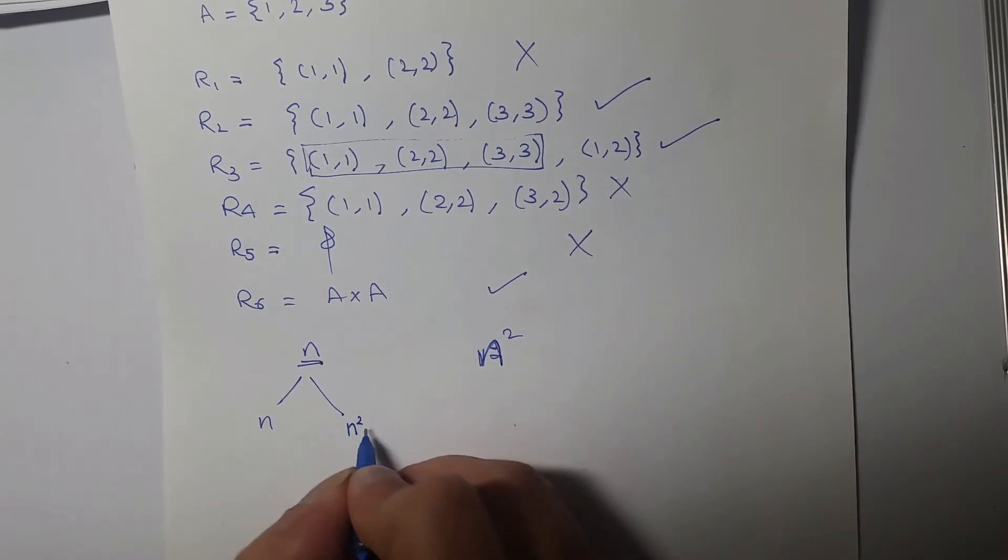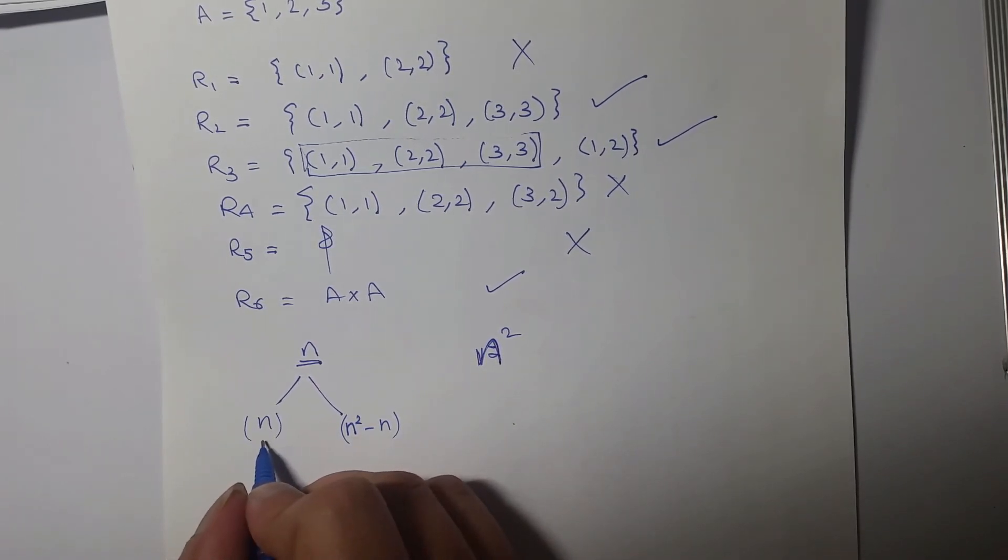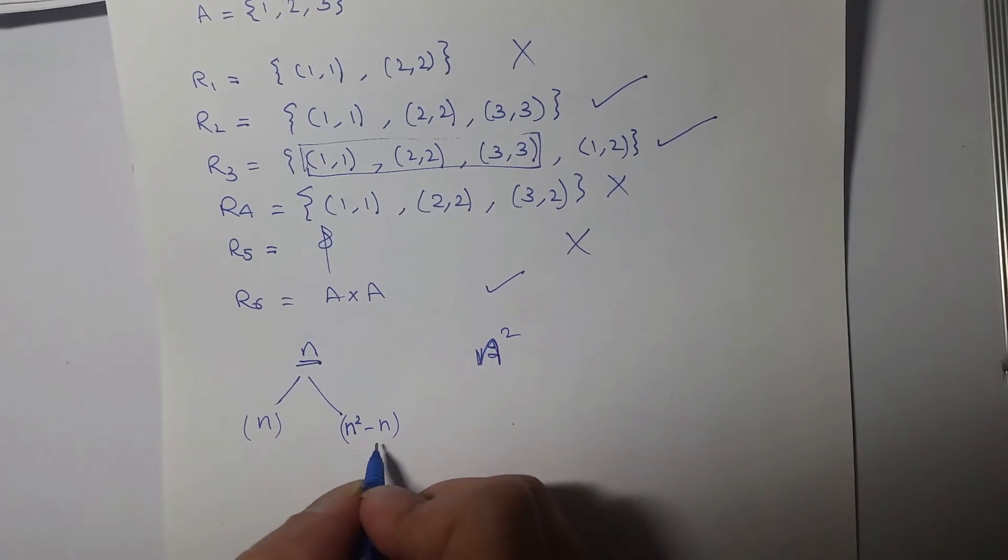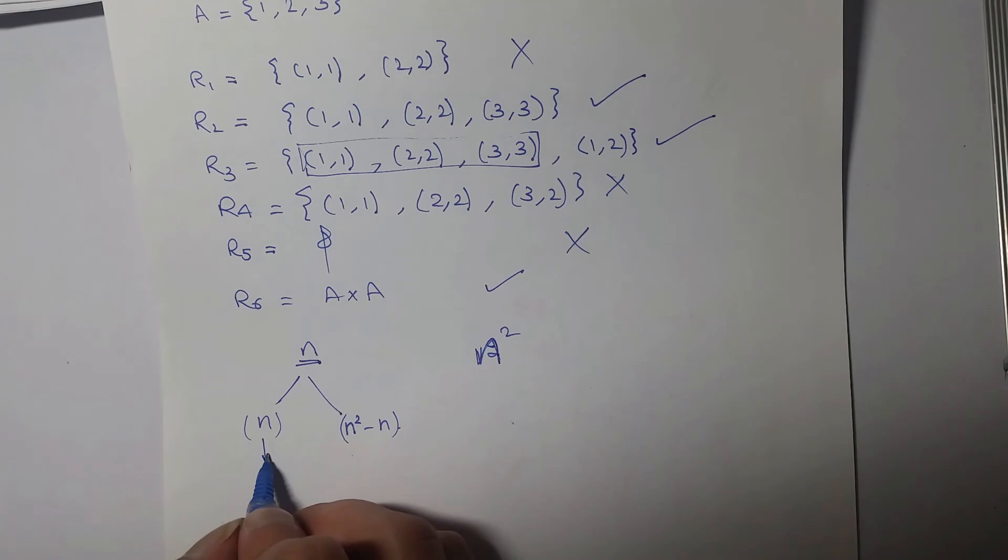So the left ones would be n squared minus n. So these are the ordered pairs where each one is related to itself, and these are all the left ordered pairs, n squared minus these n. Now from all these, these must be present, then only it is a reflexive relation.